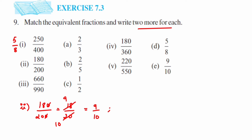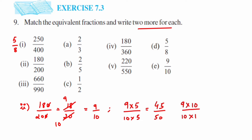Now to get equivalent fractions for 9/10, I'm going to multiply with different numbers. Multiplying by 5: 9×5 = 45 and 10×5 = 50, giving 45/50. Multiplying by 10: 9×10 = 90 and 10×10 = 100, giving 90/100. Let me write down 9/10 here so it's easy to match.